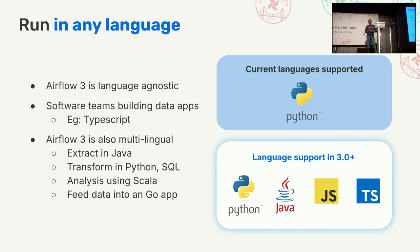A second key element: Airflow 3 will also be multilingual. This is a key difference — you can even write a DAG where your extract portion is written in Java to pull data from a Java-based enterprise application, do your transformation in Python and SQL, do your analysis in Scala, and then put the result into an enterprise application in Golang. The definite notion is that you can build integrations in multiple languages and incorporate them in the same pipeline.